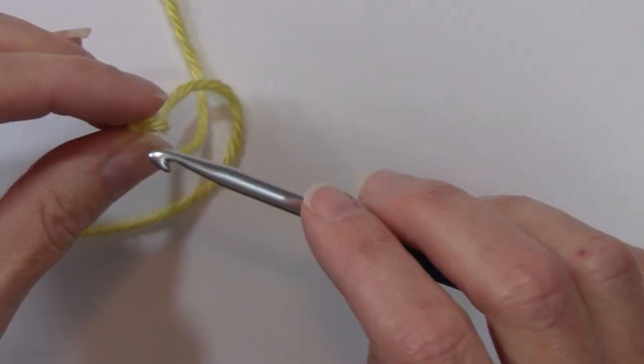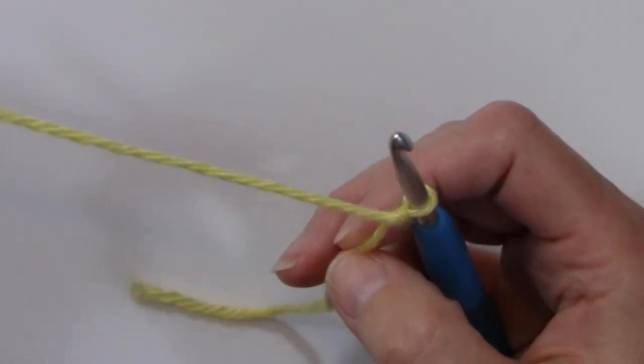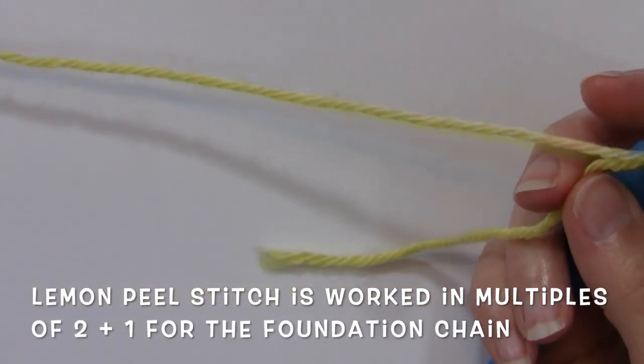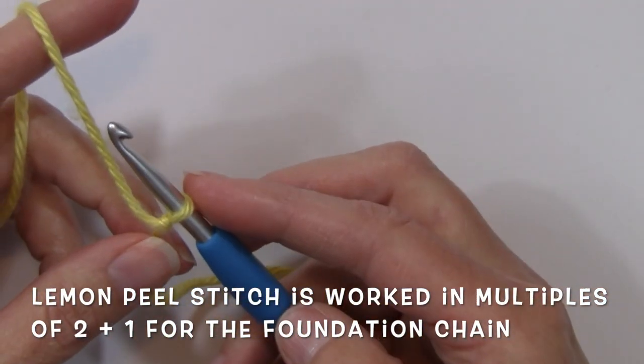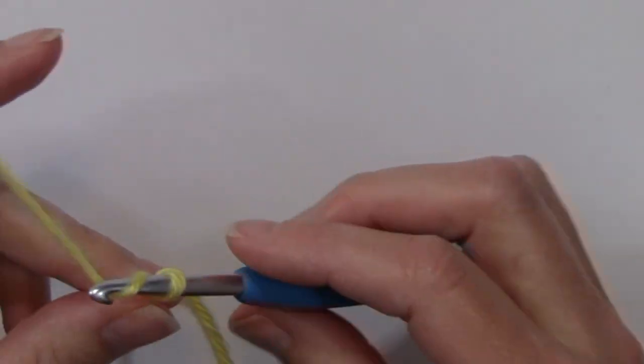So the lemon peel stitch is worked in multiples of two and for your foundation chain you will add one. So for the sample I'm going to go ahead and begin with a foundation chain of 31 to start out.